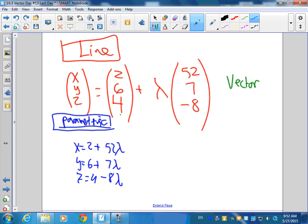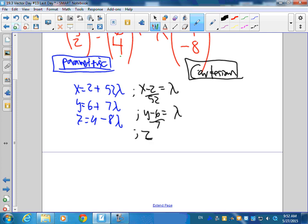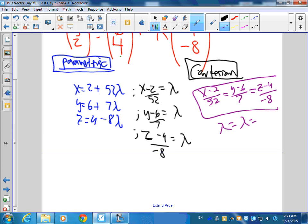And then all you have to do to get to Cartesian Peter is what? You remember? Anybody remember? It's all right here. What do you do? Solve for Lambda. Yep. So you get x - 2 = 52λ, divide by 52. y - 6 = 7λ, divide by 7. And then z - 4 = -8λ, divide by -8. So you're going to get your final answer (x - 2)/52 = (y - 6)/7 = (z - 4)/(-8). Because these Lambdas are all equal. Does that make sense?